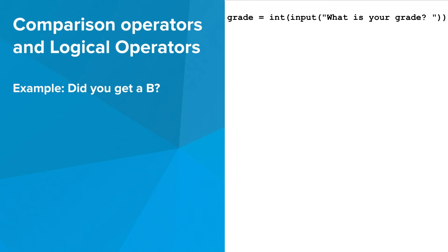Let's look at another example, this time using logical operators. We will start off asking the user what their grade is. For example, let's say the user enters 85. Using both the comparison operator and the logical operator, we can assign a boolean value to the new variable got_b.